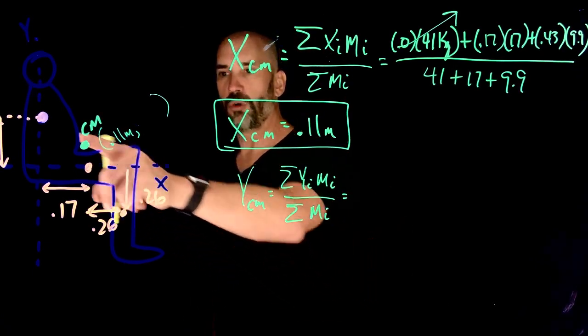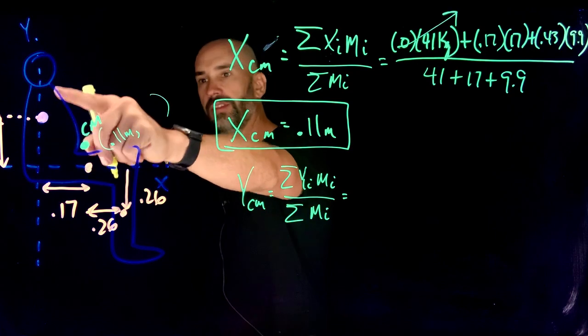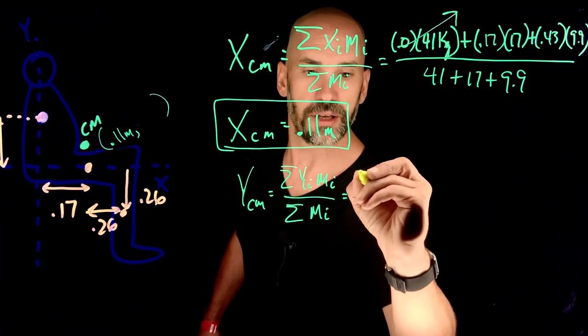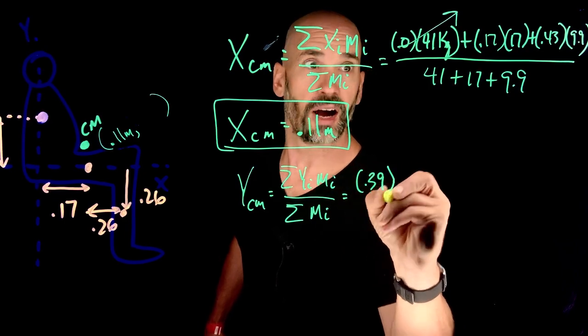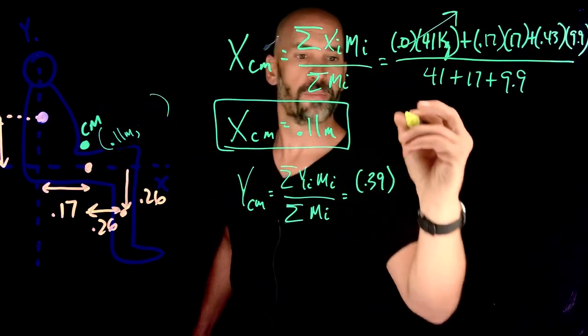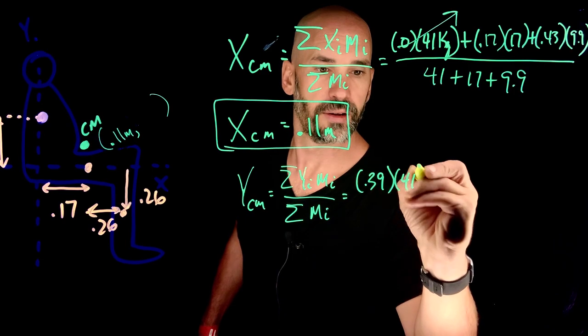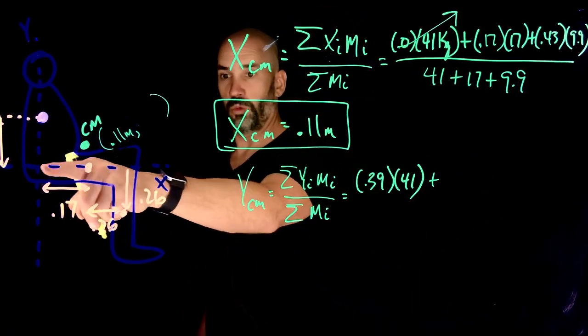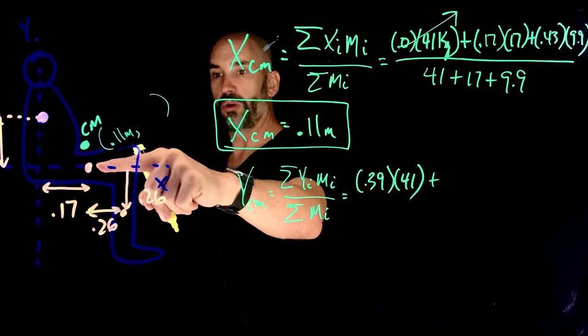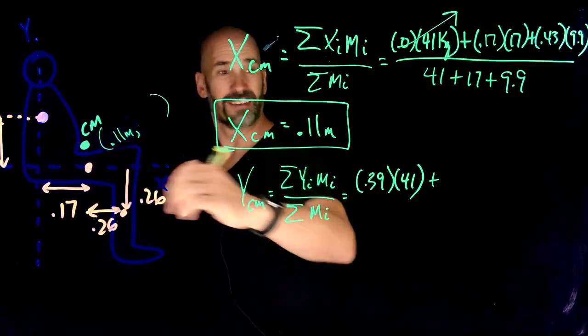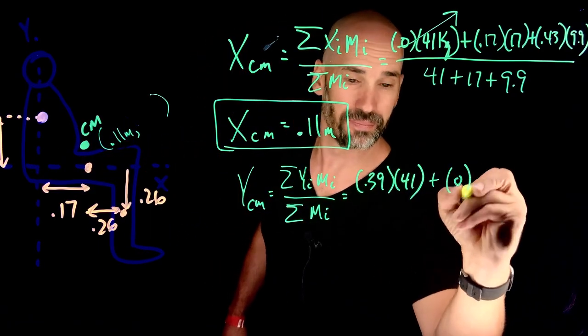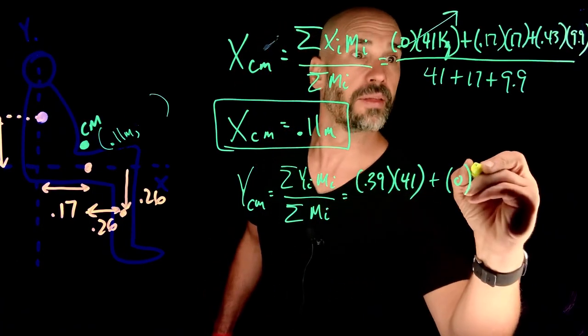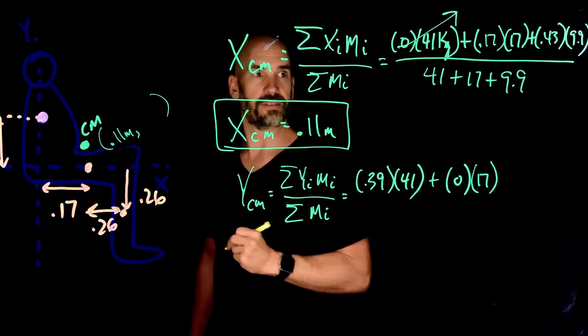We have the y center of mass is now equal to the sum of my y times my m_i all over the sum of all of my masses. What is the y coordinate of the torso with neck? 0.39. So this is going to be 0.39 times the mass of the torso, which is 41. Plus we now have upper leg. What is the y coordinate of that? It's right on the x-axis, so the y coordinate is simply 0. That's a piece of cake. Times the mass of that is 17, the upper leg is 17.